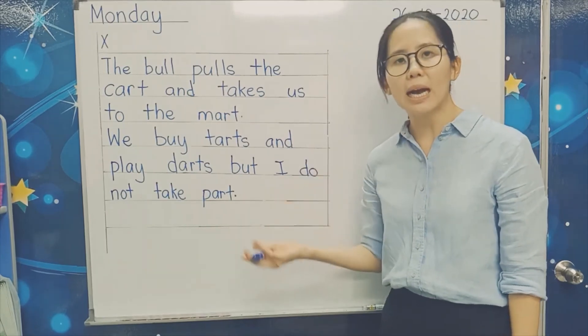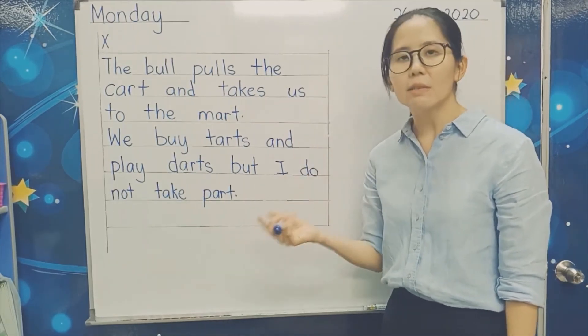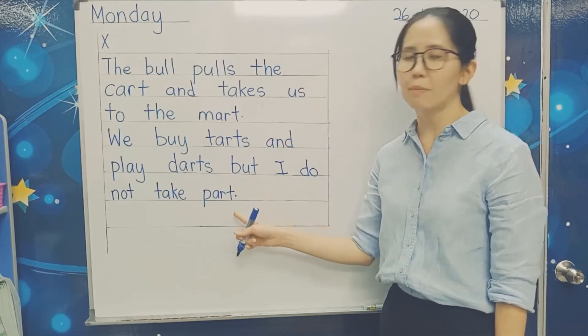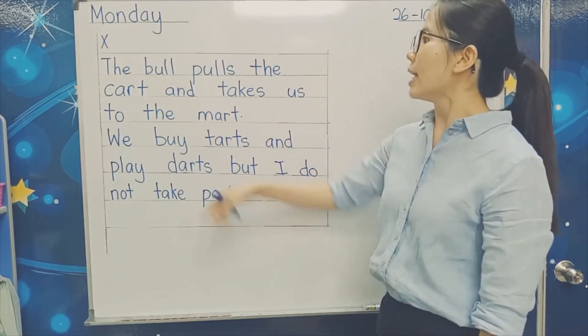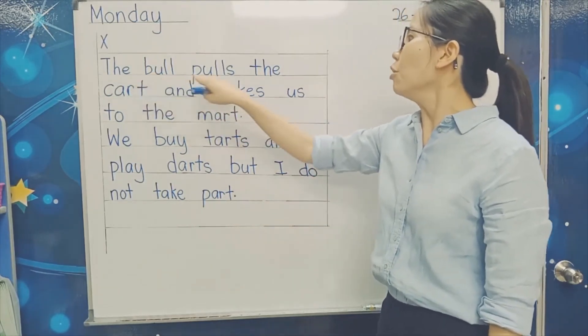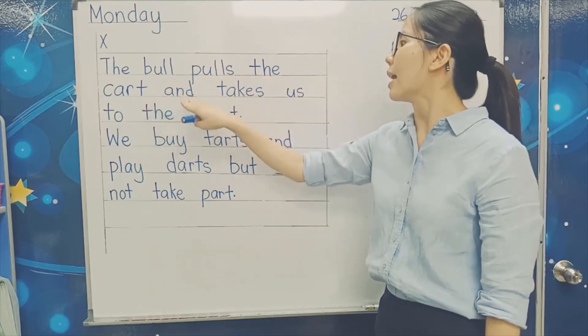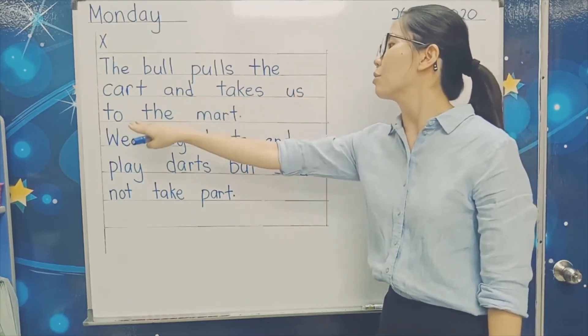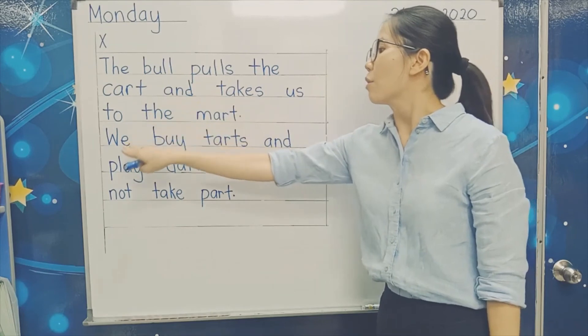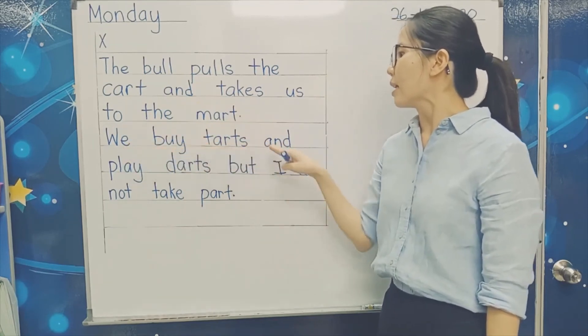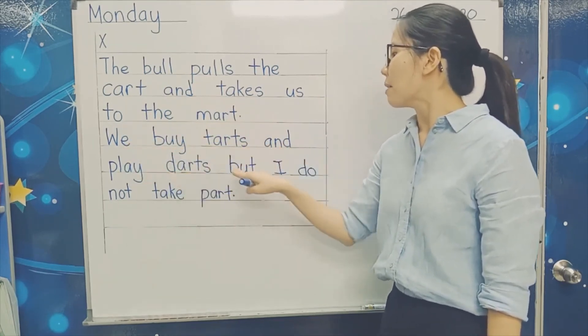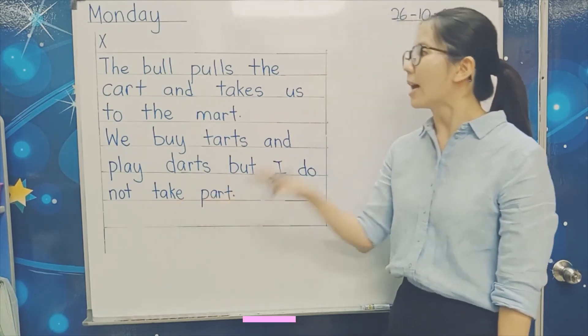But I do not take part. So we go and buy tarts, we go and play darts, but I don't know how to play. That's why I never take part. I don't take part. Let's read again. The bull pulls the cart and takes us to the mart. We buy tarts and play darts, but I do not take part.